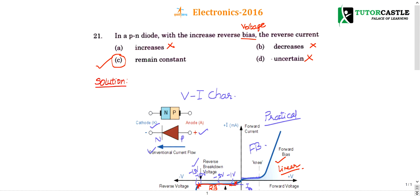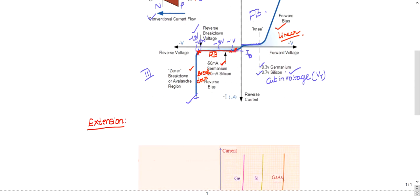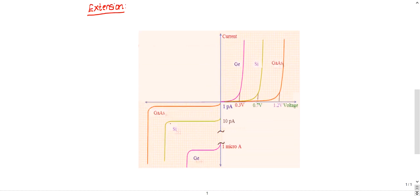Now let's see the extension of PN junction diode. Which type of material will have fastest breakdown, fastest cut-in voltage? These are the V-I characteristics of various materials. Germanium will have least cut-in voltage, then comes silicon at 0.7 volts, then comes gallium arsenide which has a cut-in voltage of 1.2 volts, the highest.